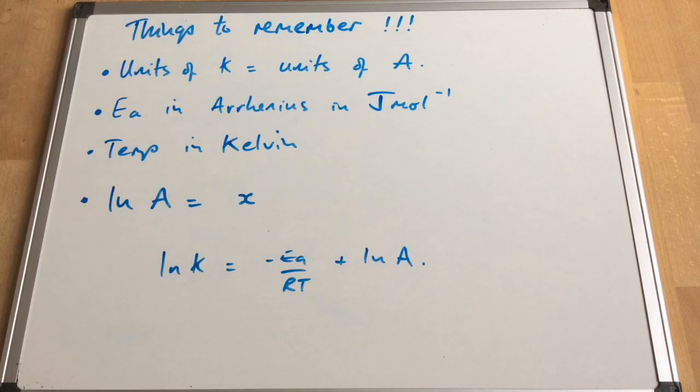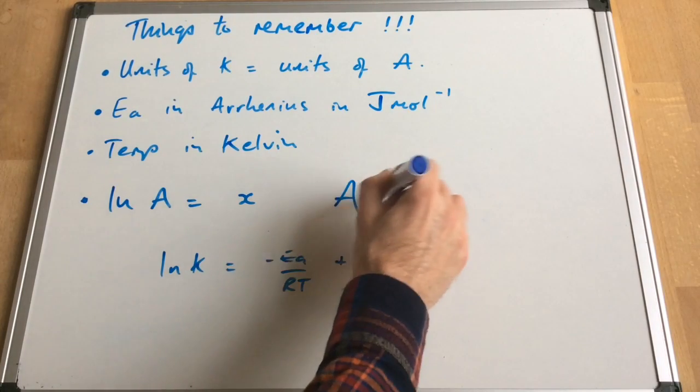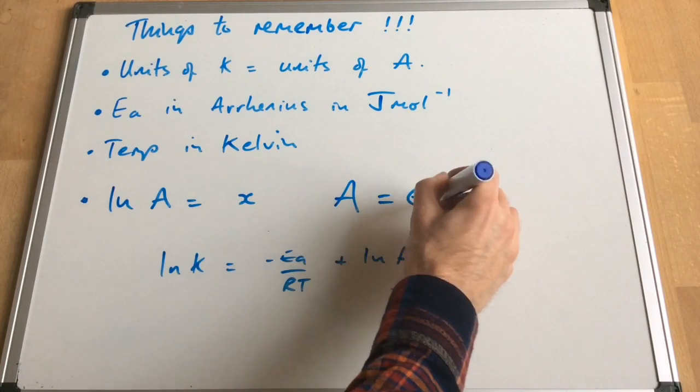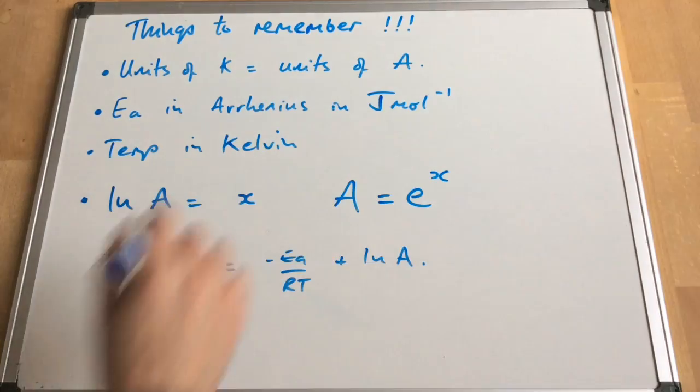And finally, if you're doing a calculation where you've got to calculate this pre-exponential factor A, you can see that using the natural log form of the equation, you're going to end up calculating ln of A. So if you get a ln A value equals, let's just call it X, then A is equal to E to whatever that X number is there.